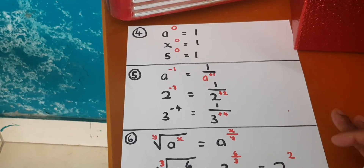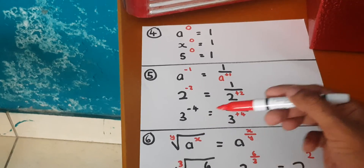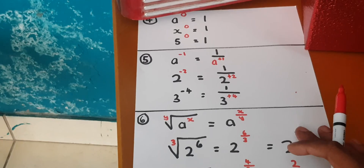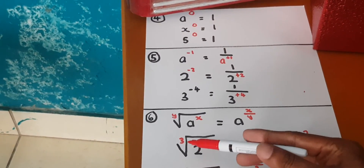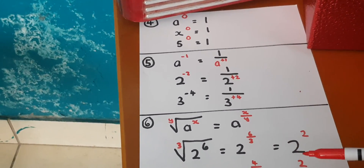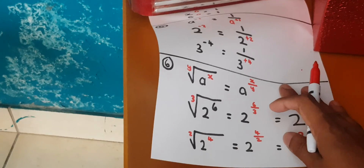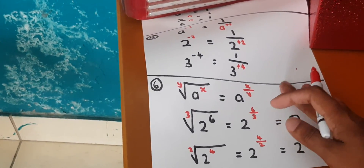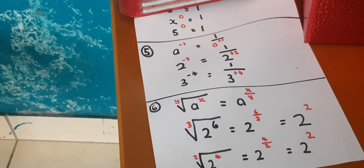The last law: any root to a base with the power of x is equal to a to the power x over y. For example, the sixth root of two to the power of six — you say two to the power of six over three, which equals two to the power two. Another example: the square root of two to the power four equals two to the power of four over two, which equals two to the power of two.